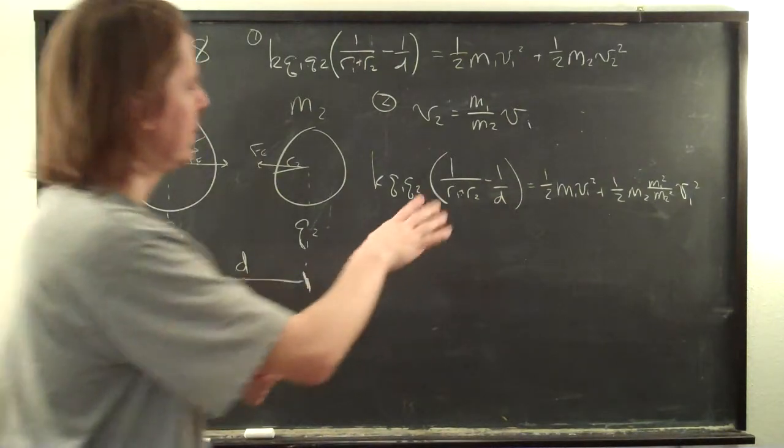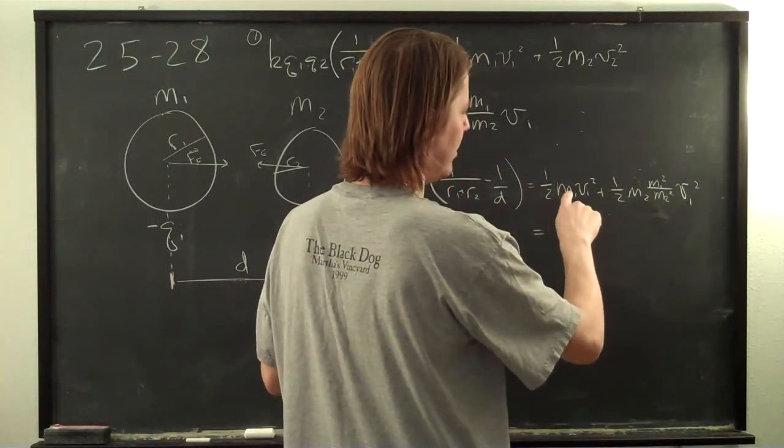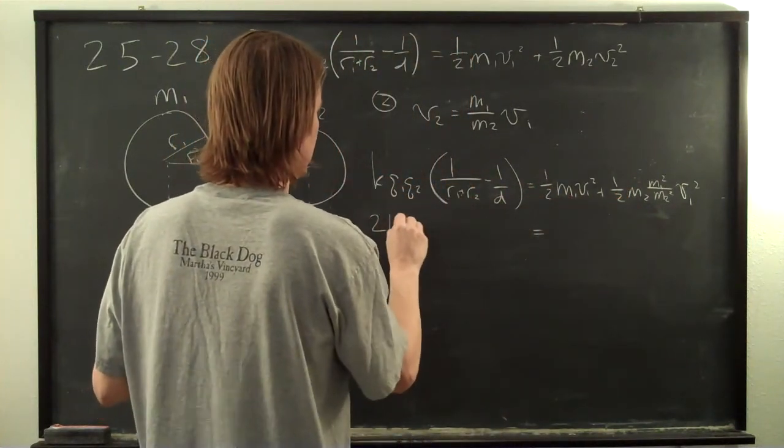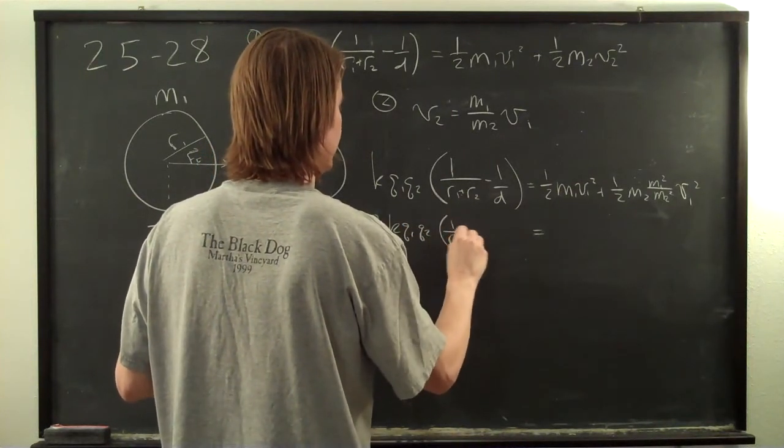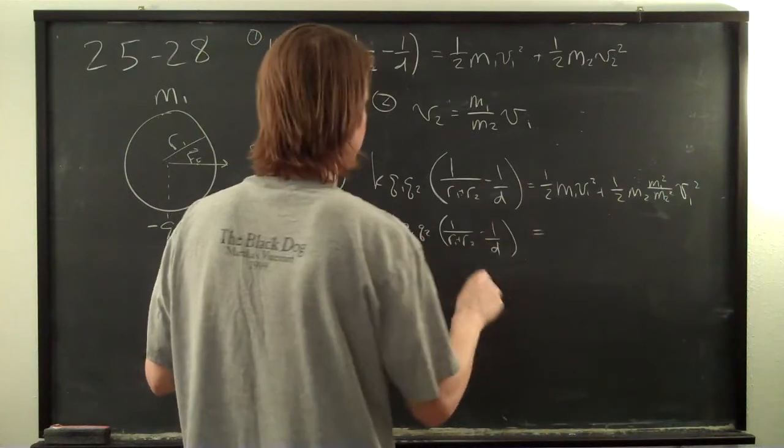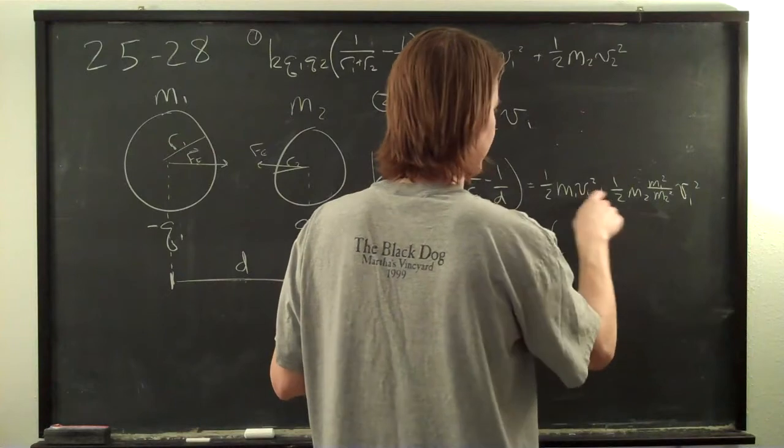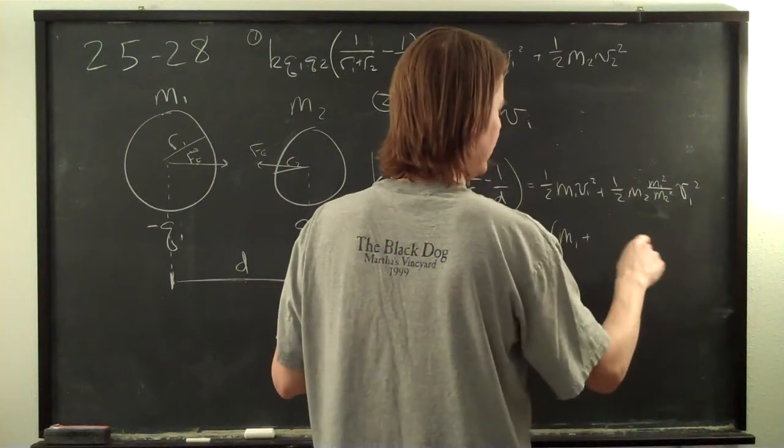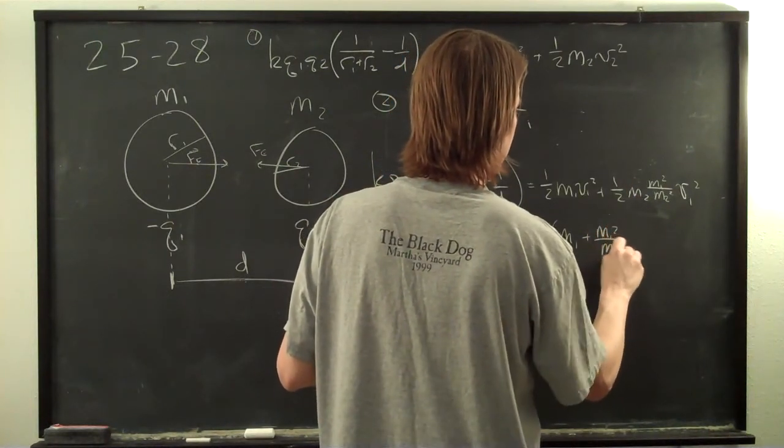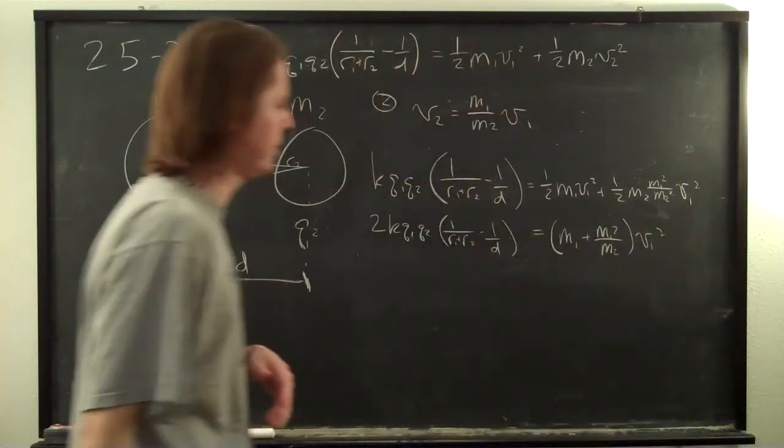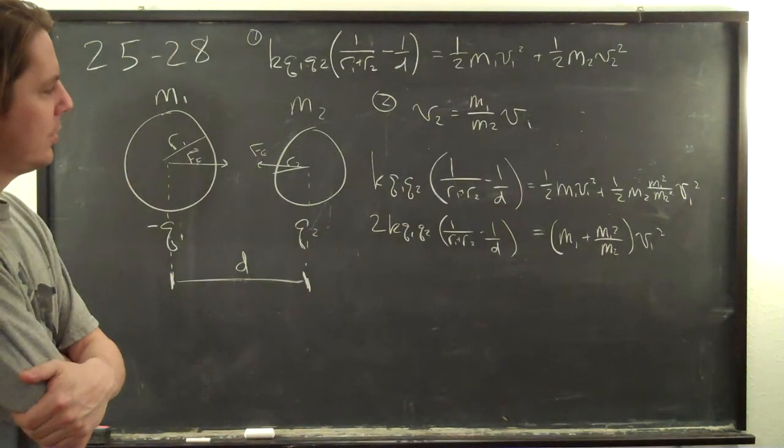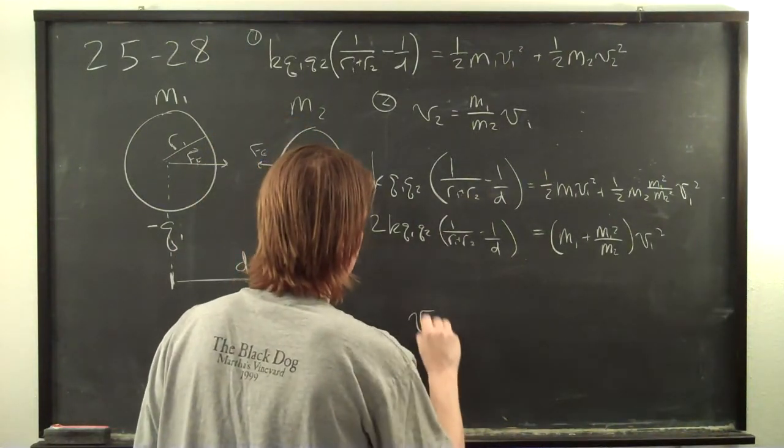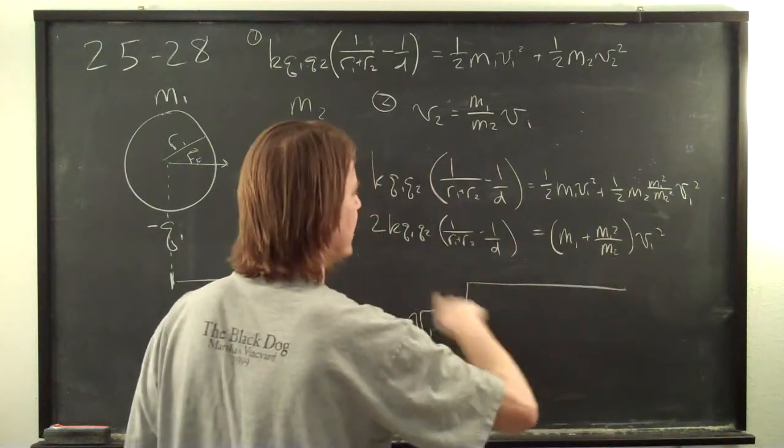So let's see, so now I'm going to just rewrite this part a little bit. We can pull out the v1 squared. Let's go ahead and just take the 1/2 over here. 2 k q1 q2 1 over r1 plus r2 minus 1 over d, right over the 2, and then pull out everything in front of the v1 squared. That's m1 plus m2 is canceled plus m1 squared over m2, v1 squared. And now we're very close. We can solve for v1. So v1 is equal to a very large square root. So we're bringing this under here, taking the square root.